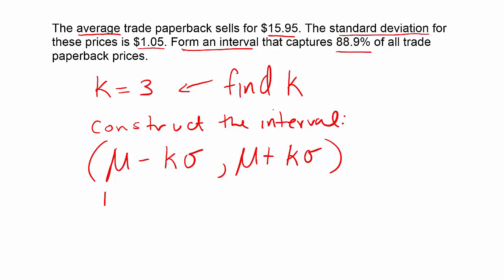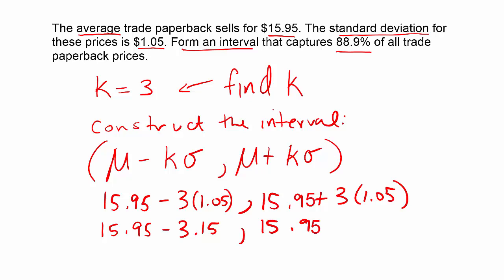And we have all these items. We have the mean, it's $15.95. We know that k is 3. The standard deviation here is $1.05. So $15.95 minus 3 times $1.05, $15.95 plus 3 times $1.05. And 3 times $1.05 is $3.15. If I take $3 from $15, I'll have $12. If I take $0.15 from $0.95, I have $0.80. So $12.80 is the first number in our interval.